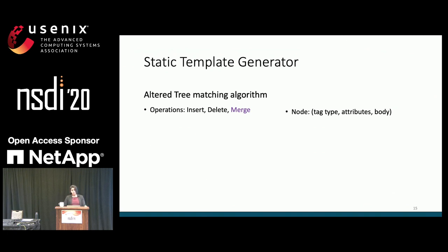Given the possible HTML versions for a page, the goal of the static template generator is to extract the maximum shared content between them. We use a slight variation of a tree matching algorithm: given two input HTML trees, it outputs the number of operations to transform the first tree into the second. We have standard insert and delete operations, but we introduce a new merge operation which allows modifying attributes and body of a node but not the tag type, because tag types impact downstream HTML and changing them could trigger errors.